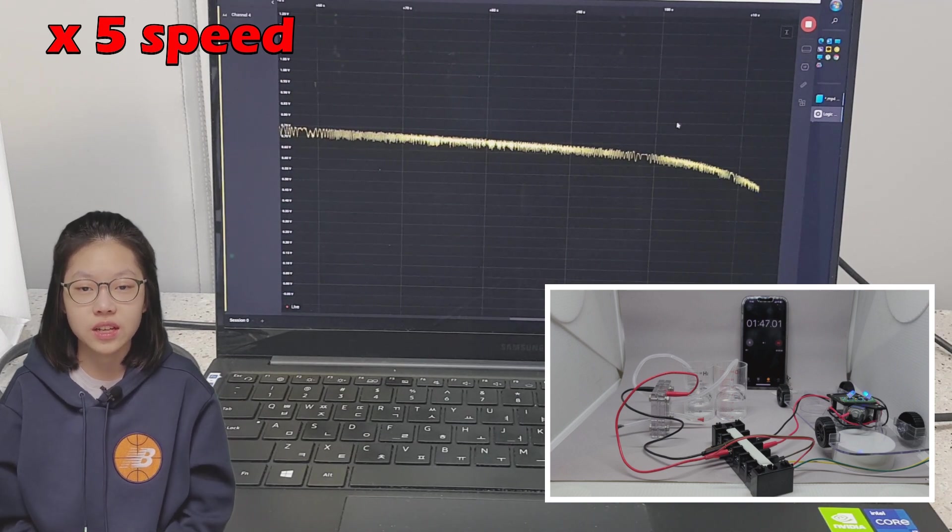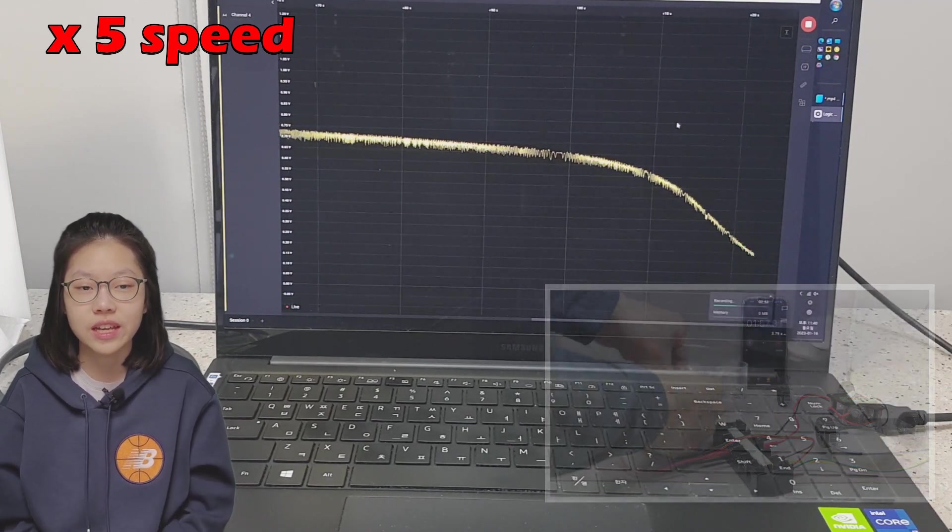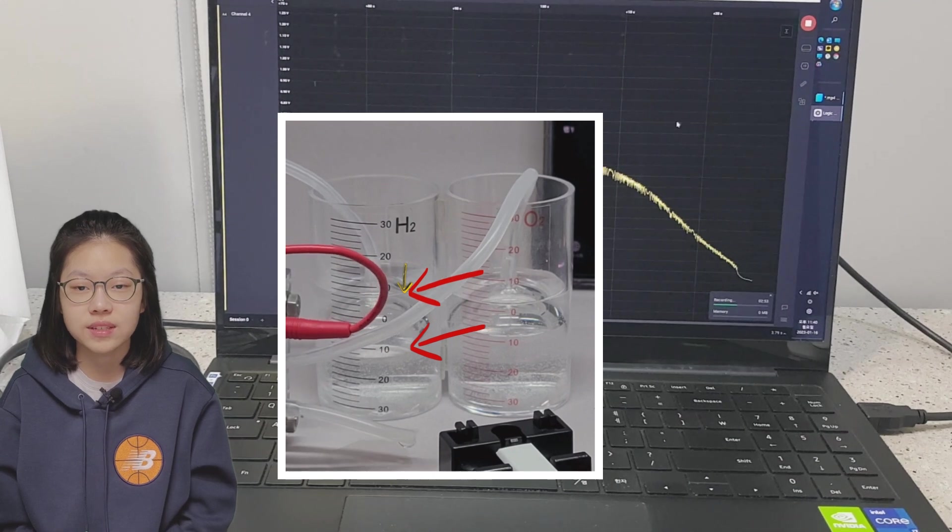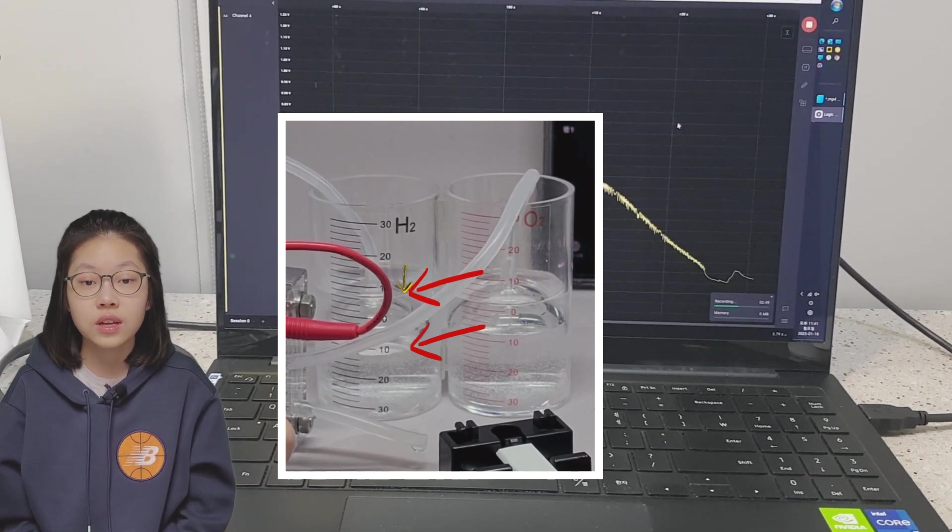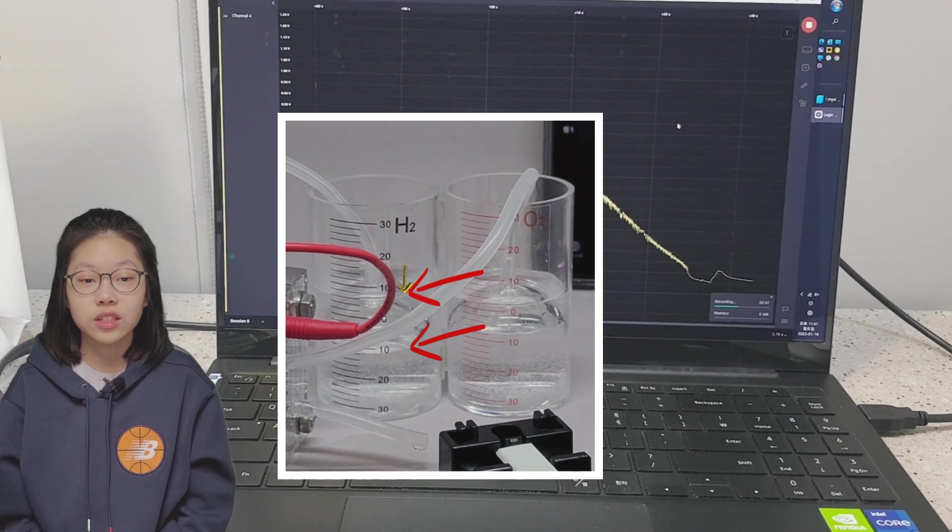After 1 minute and 30 seconds, it starts to drop rapidly, and at 1 minute and 55 seconds, it drops below 0.1 volt and turns off.